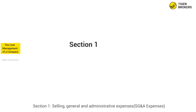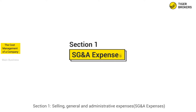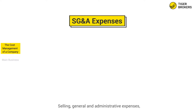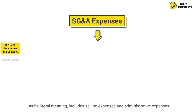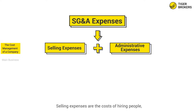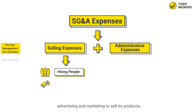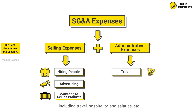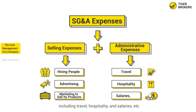Section 1: Selling, General, and Administrative Expenses. Selling, General, and Administrative Expenses, as its literal meaning, includes selling expenses and administrative expenses. Selling expenses are the costs of hiring people, advertising, and marketing to sell products. Administrative expenses are the costs of corporate management, including travel, hospitality, and salaries, etc.